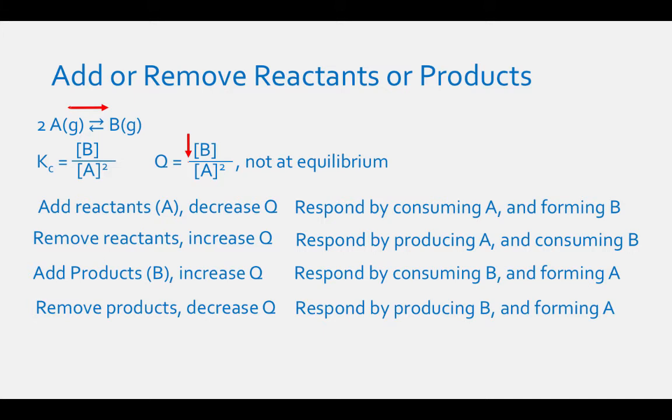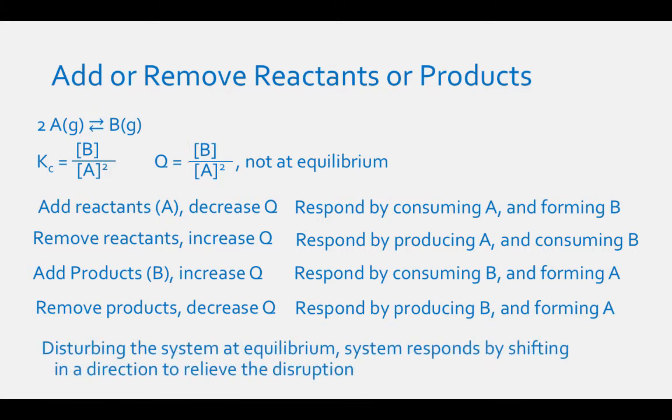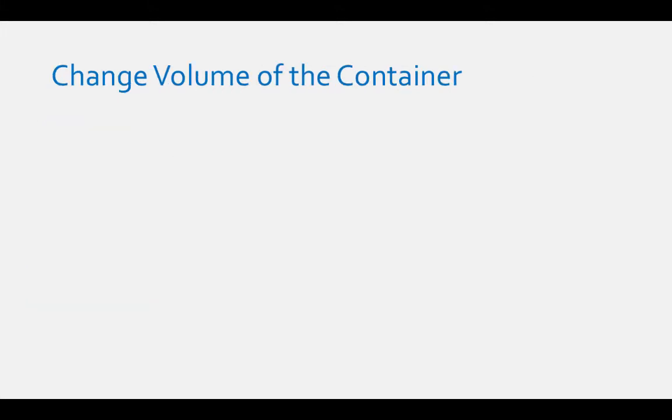Since we are disturbing the system at equilibrium, the system responds by shifting in a direction to relieve the disruption. What happens when you change the volume of the container that contains a gaseous equilibrium system?